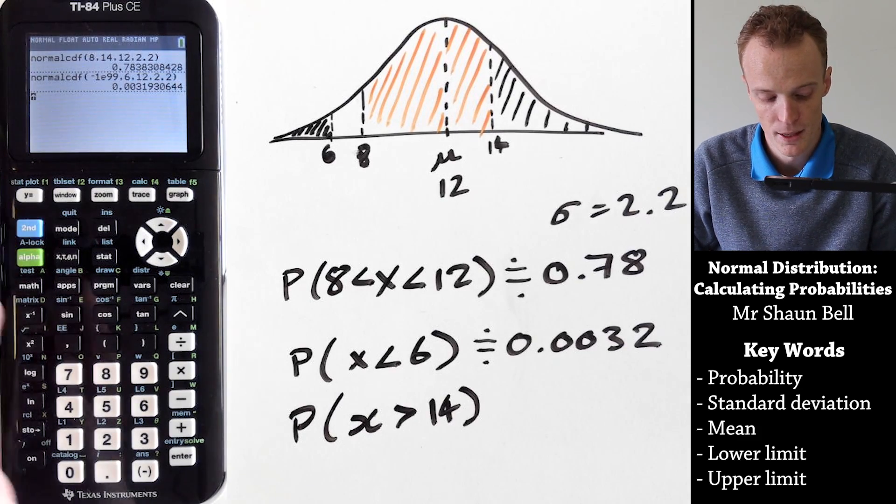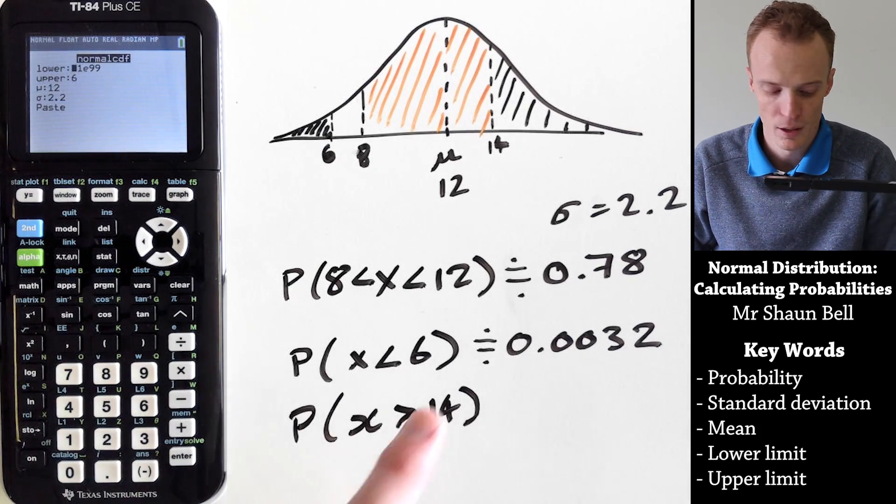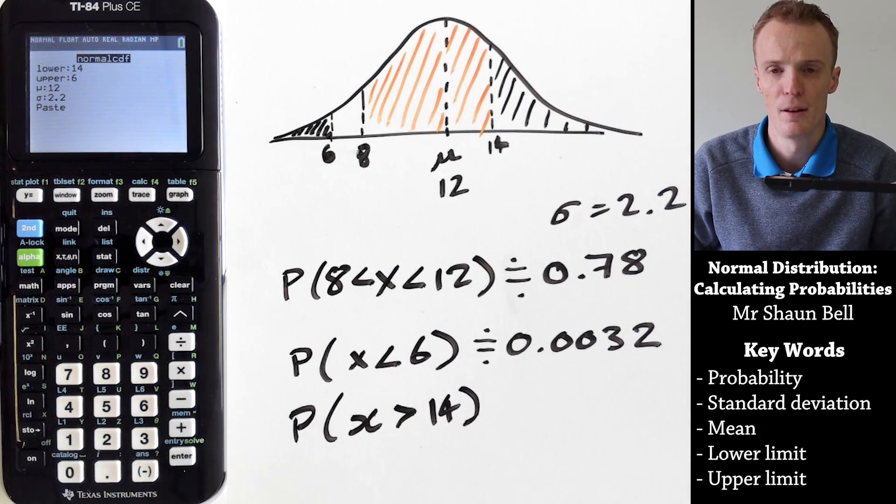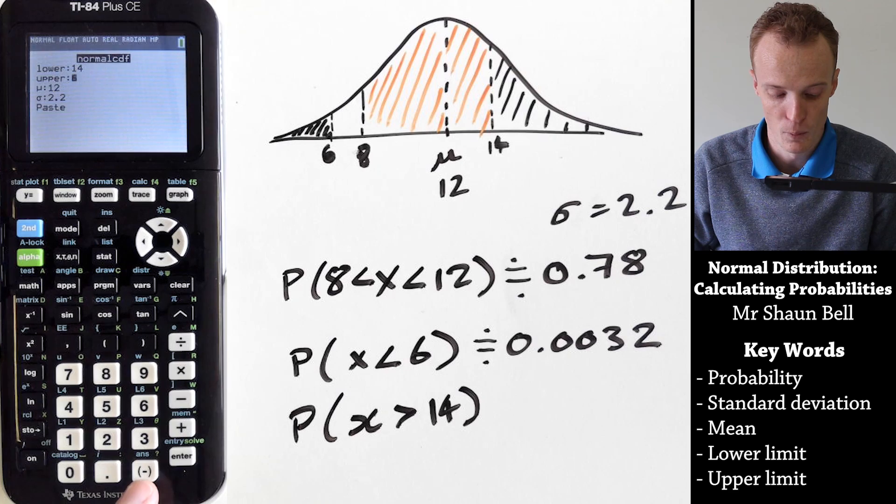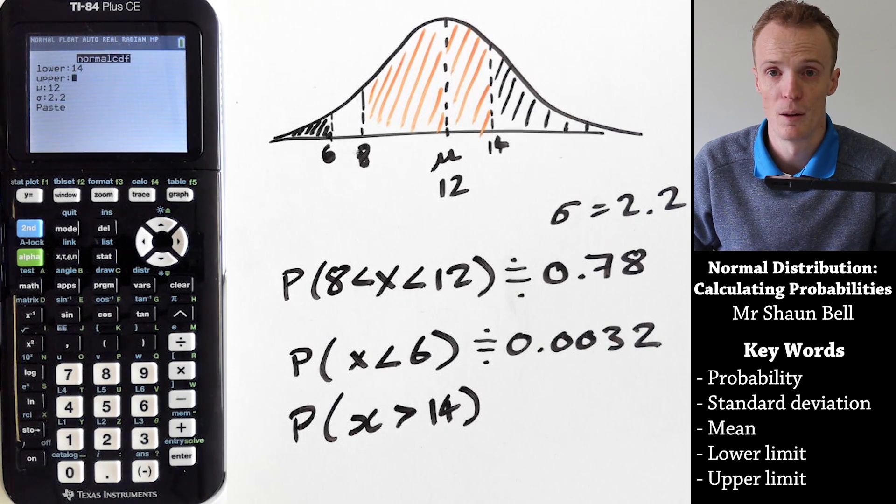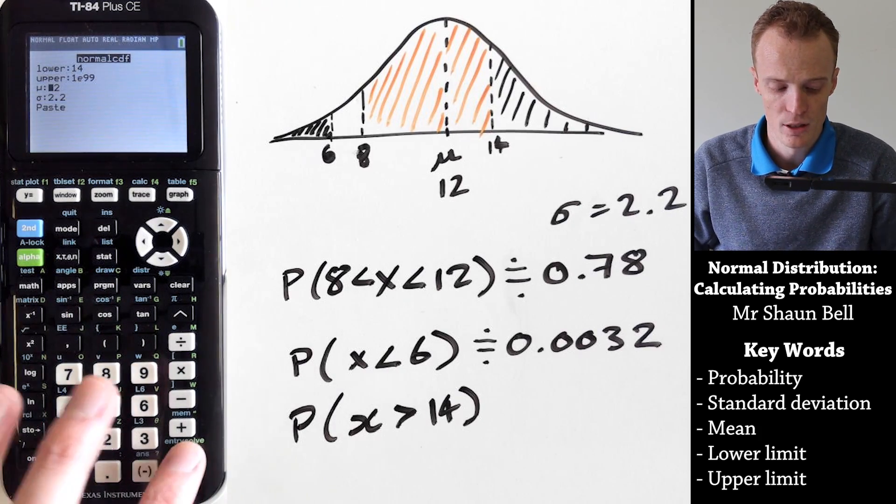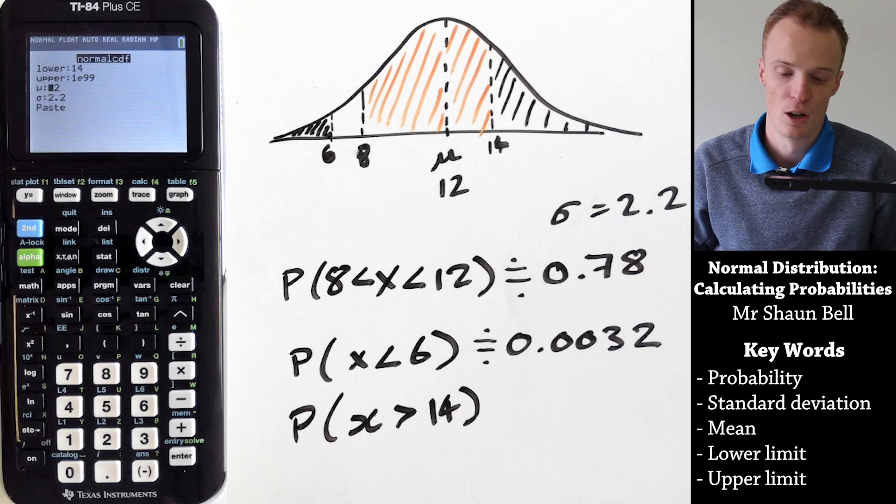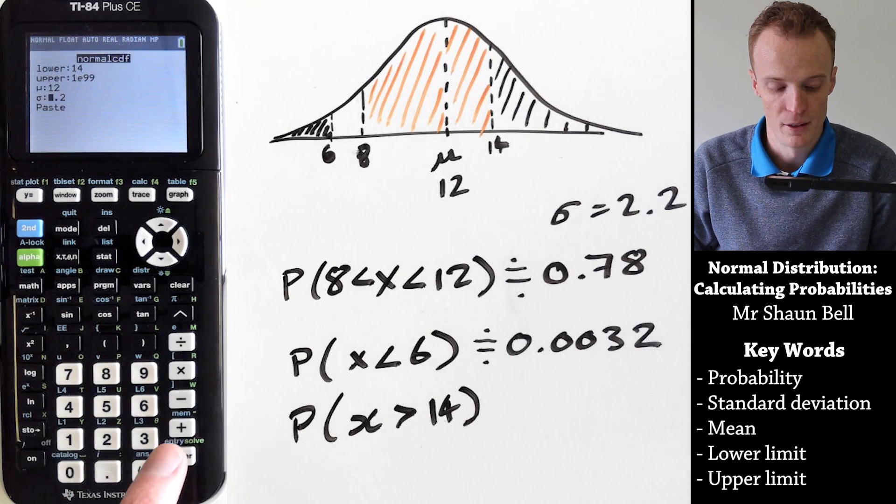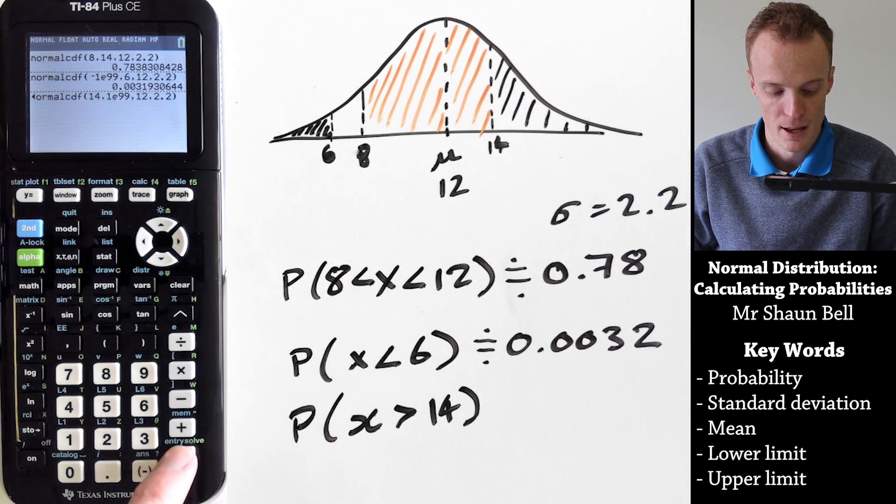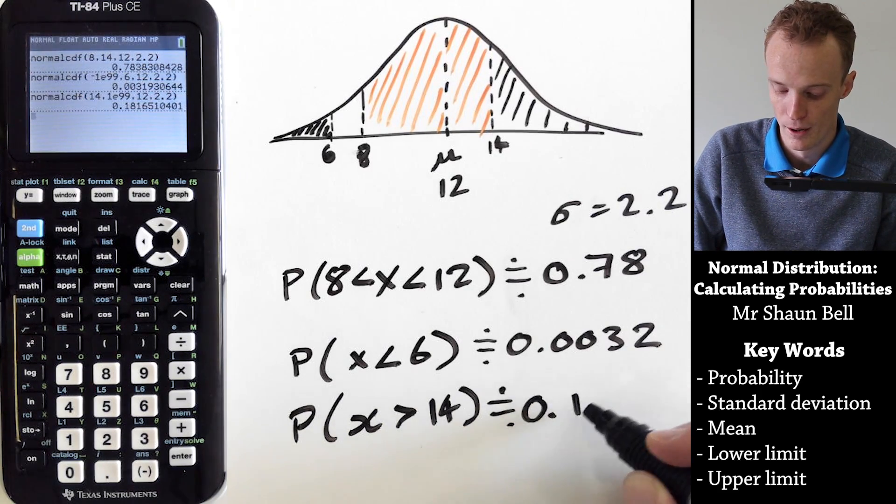To enter that, I'd go to my second, my distribution, go to my normal cdf. My lower here is going to be 14, but my upper needs to be a really large number. So we do the opposite to what we did before. Before we did negative 1 e 99, this time we're going to do positive 1. So 1 second e 99, which is a really large number, so it's telling this calculator that it's infinitely large. Our mean and standard deviation remain the same, so when we paste that through, it will give us a probability of approximately 0.18.